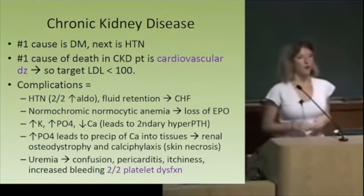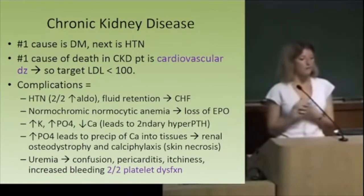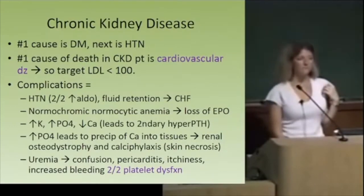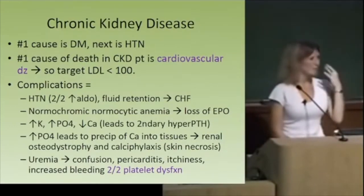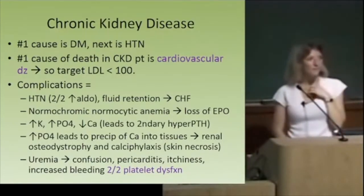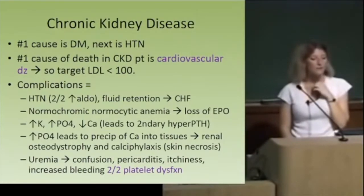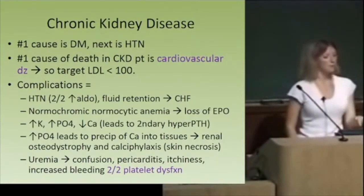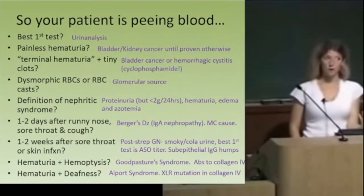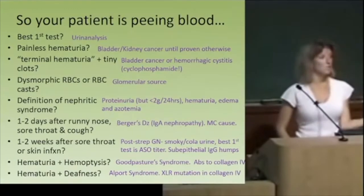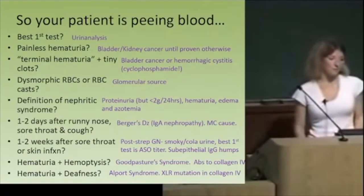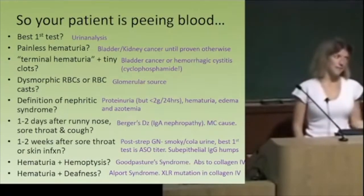If the patient is peeing blood one to two days after a runny nose, sore throat, and viral-type illness, the most common cause of nephritis is IgA nephropathy (Berger's disease). The timeline is important: one to two days after viral symptoms means IgA nephropathy. If it's one to two weeks later after a sore throat or impetigo, then you're thinking post-streptococcal GN. The time course is the determining factor.